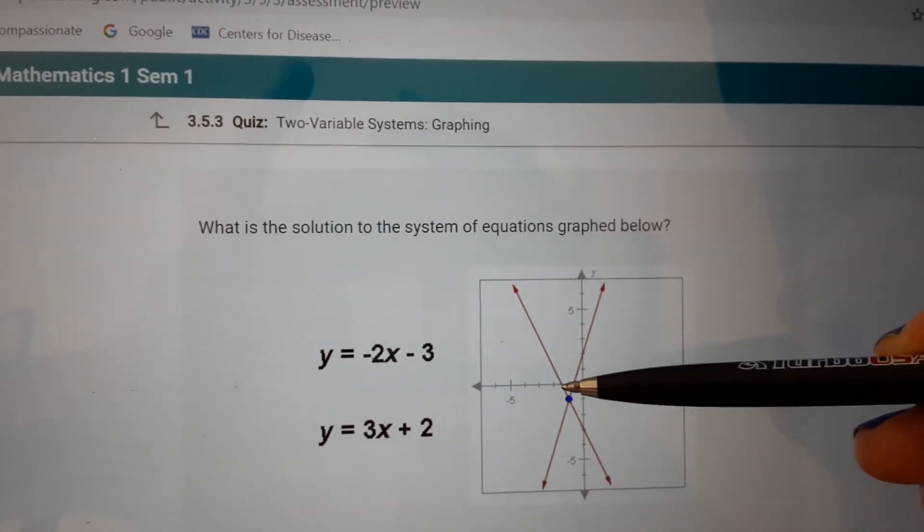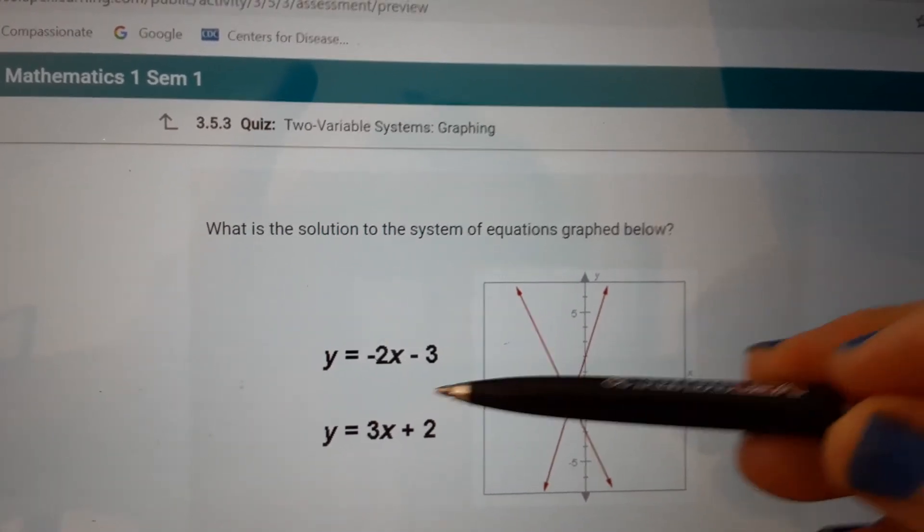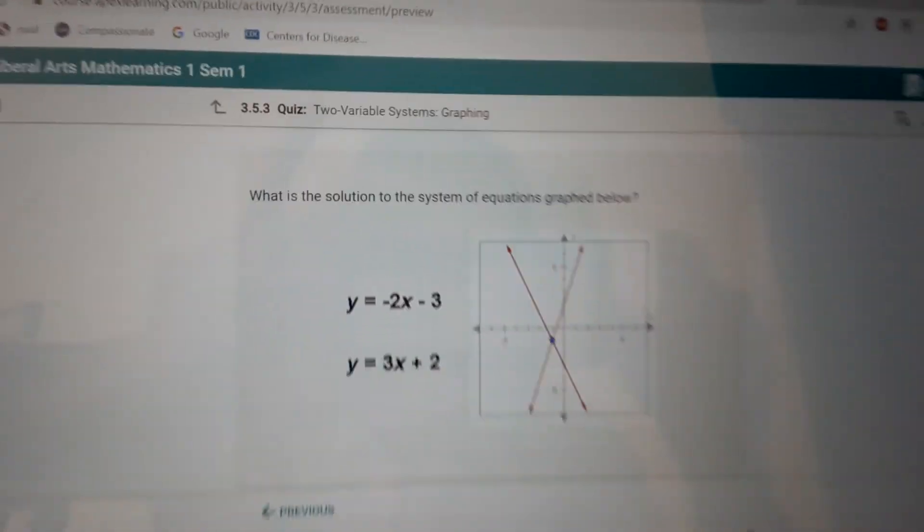It goes negative 1, negative 1. They're showing it to us. We just have to put in that point. It goes negative 1, negative 1. Thank you.